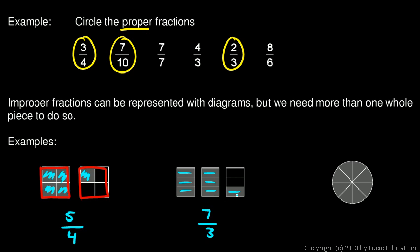So this diagram, the shaded part of this diagram, represents 7 thirds. Each of these smaller rectangles being 1 third.